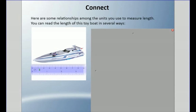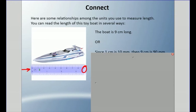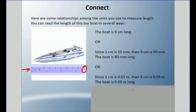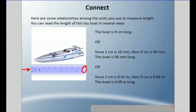We can read the length of this toy boat in several ways. You can see the ruler — if we're talking centimeters, that's the top row. This boat is nine centimeters long. Since one centimeter is ten millimeters, nine centimeters is ninety millimeters. Look between each centimeter mark and there are ten equal pieces there. Or, since one centimeter is one hundredth of a meter, nine centimeters is nine hundredths of a meter.